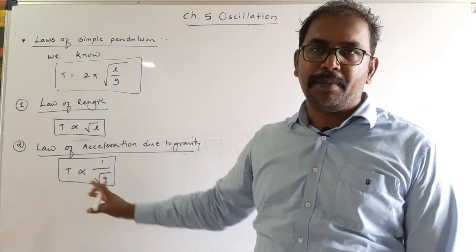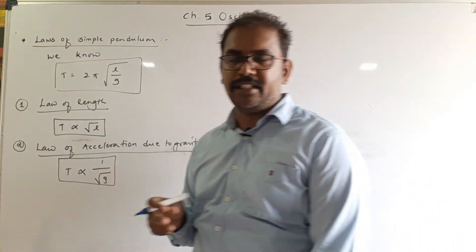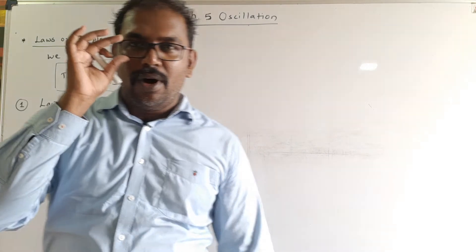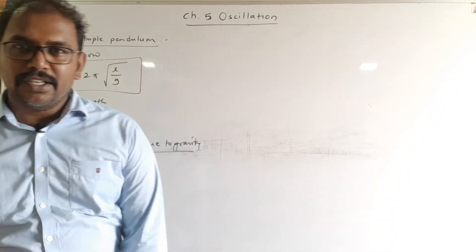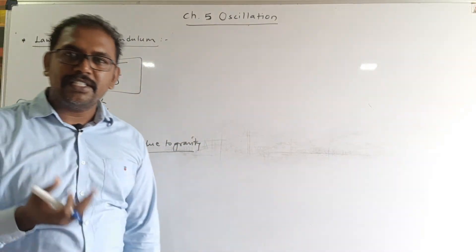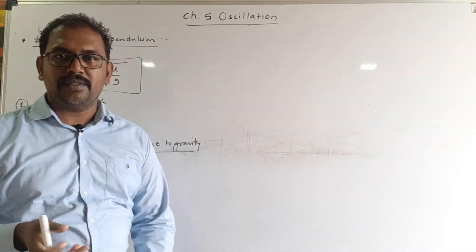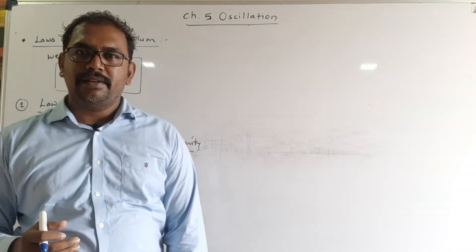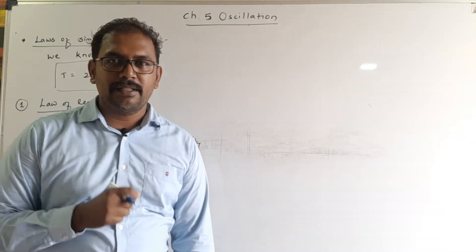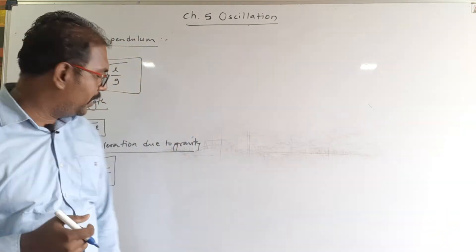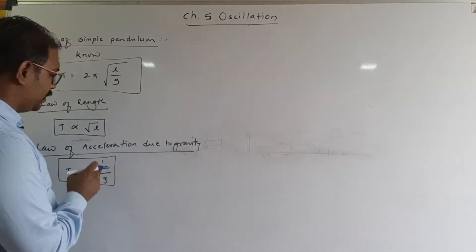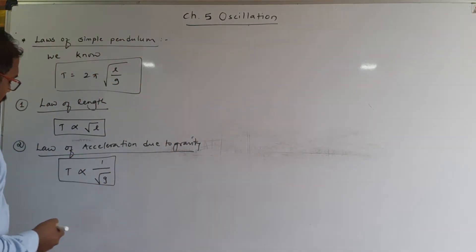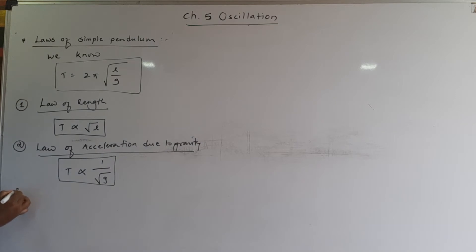When length is constant, the period depends on the acceleration due to gravity. In a previous standard we learned how the acceleration due to gravity changes with height, depth, and place — that was already covered in the gravitation chapter.